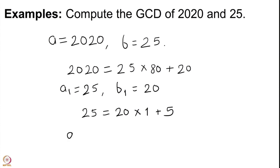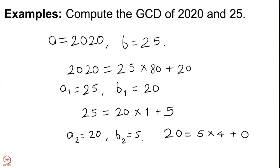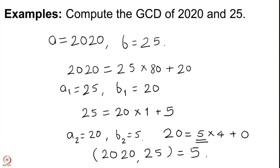We let A₂ = 20, B₂ = 5, and then we get 20 = 5×4 + 0. So we are done — 5 is our GCD. The GCD of 2020 and 25 is 5. You may say you could tell this GCD just by looking at the numbers, which is true. But a process is important and this process can be applied to any pair of natural numbers, not just to simple numbers like 2020 and 25.